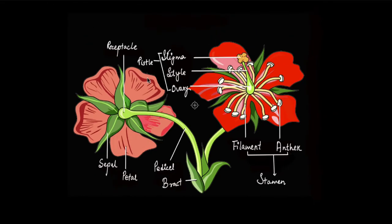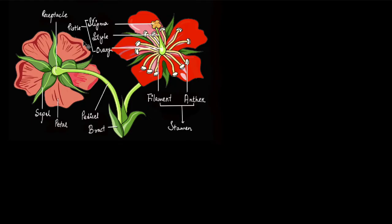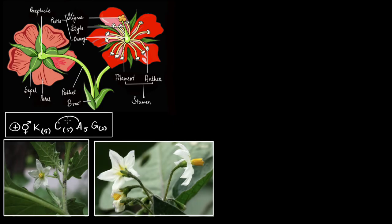Like any other formula, floral formulas also have symbols and numerical representations. Here is a floral formula for the particular flower you see on screen — it is called Solanum nigrum. We will try to understand what these different symbols actually signify, starting with the very basic ones.